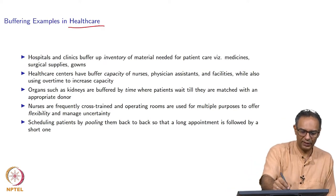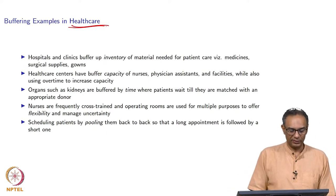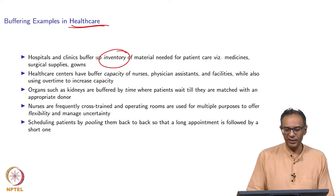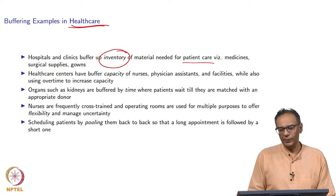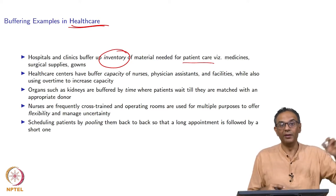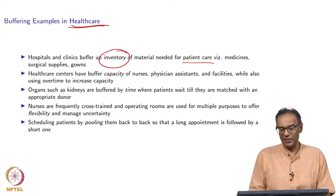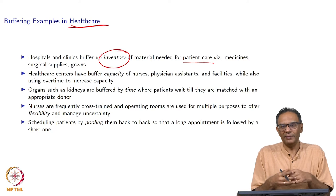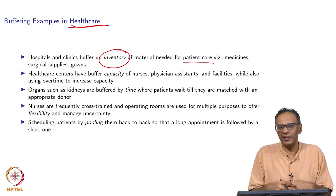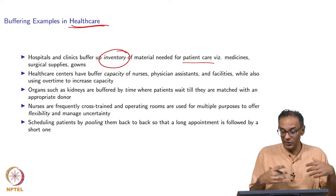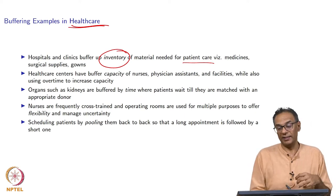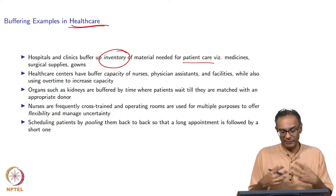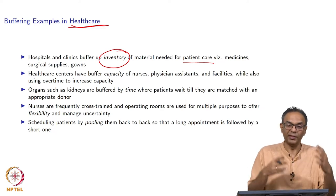Next, let us look at healthcare. Hospitals buffer inventory of patient care materials. For example, the pharmacy will typically carry a bunch of medicines — not just enough to meet demand, but a little more so that if a few extra patients come, they have medicines in stock. However, medicines expire, so you have to be careful about how much to carry — that is the harder quantitative question. You could also have surgical supplies; a doctor performing surgery cannot afford to realize they are missing needed items.